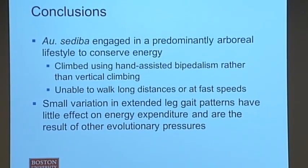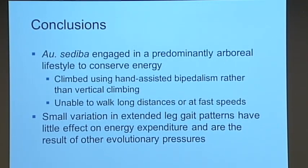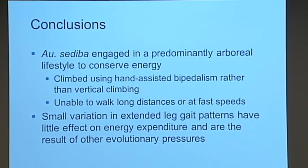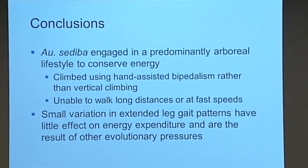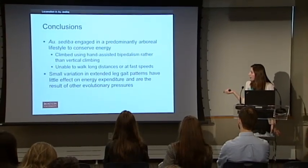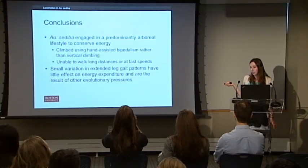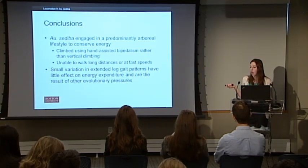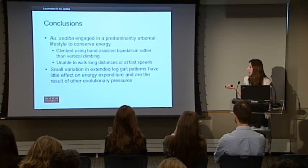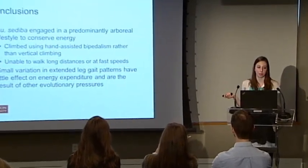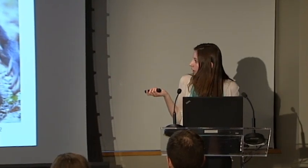To summarize our conclusions: first, sediba probably engaged in a predominantly arboreal lifestyle to conserve energy. Second, she probably moved using hand-assisted bipedalism rather than vertical climbing. Third, she was unable to walk long distances or at fast speeds. Finally, because the variation in energy expenditure between hyperpronating and normal human gait was very small, other evolutionary pressures — rather than simply minimization of energy expenditure — must have driven the development of hyperpronation. Thank you, and I think we have some time for questions.